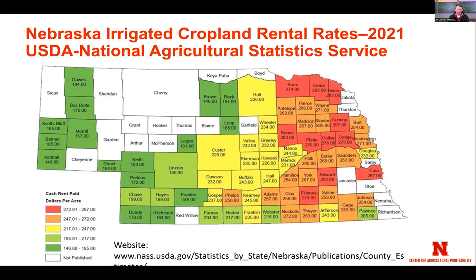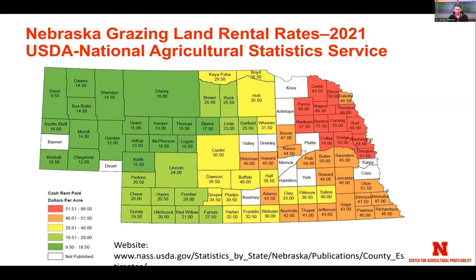And then finally we have a grazing land cash rental rate. If a county is shown in white, there probably weren't enough responses to produce a number with confidence, or in some areas like York County there's not much grazing land relative to irrigated or dryland cropland. This is a grazing seasonal rate that the USDA produces for one acre; stocking rates tend to reflect the differences.